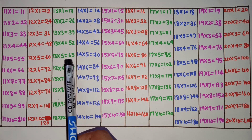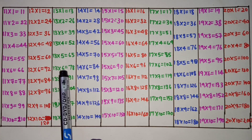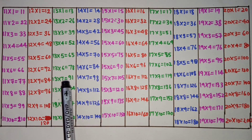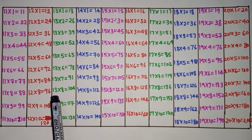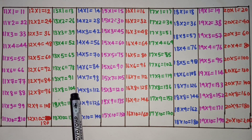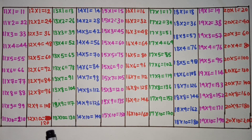13 6s are 78, 13 7s are 98, 13 8s are 104, 13 9s are 117, 13 10s are 130.